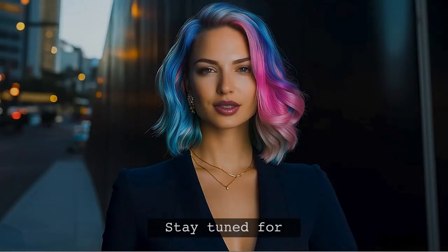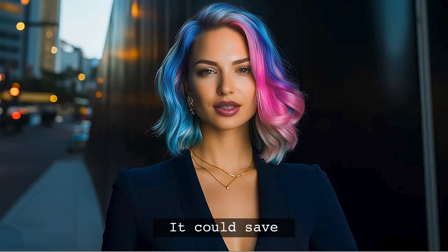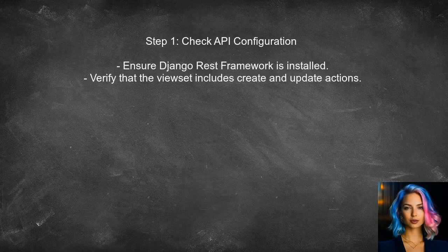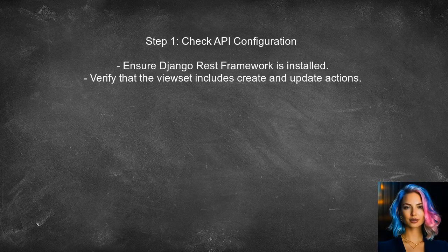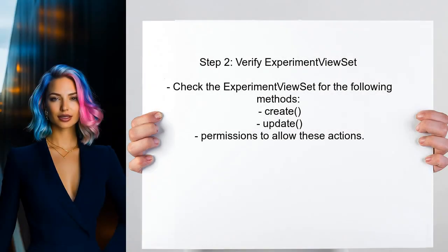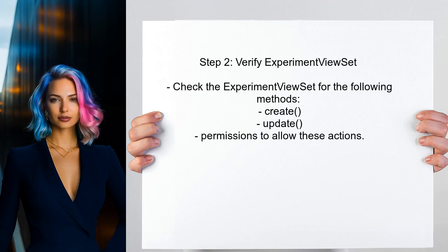And stick around — at the end of this video I'll share a crucial tip that could save you a lot of time and headaches when working with APIs. To address the issue of missing create and update endpoints in CoreAPI, the user should first ensure that the Django REST framework is properly configured to include these methods in the API schema. Next, the user should confirm that the experiment view set is correctly set up to allow these actions. This involves checking the permissions and the methods defined in the view set.